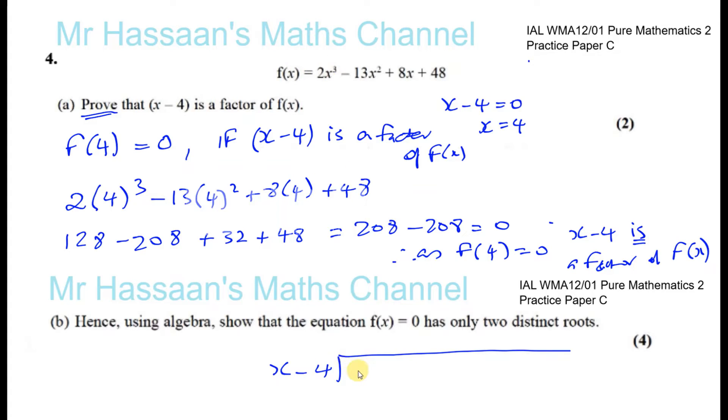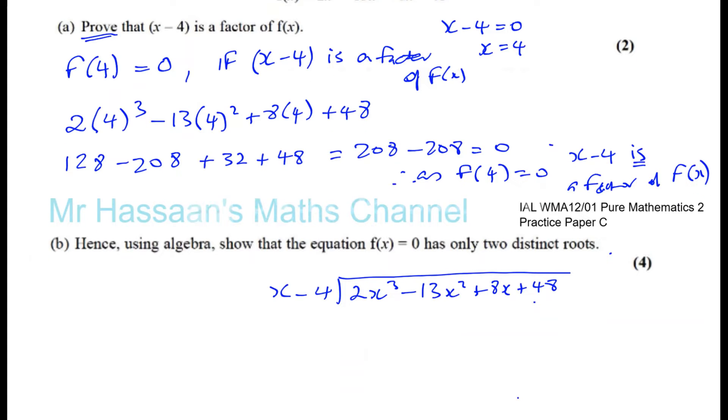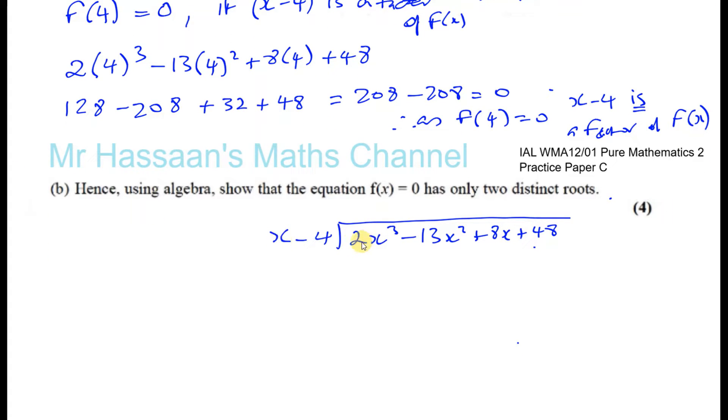I've got here 2x³. So we've got 2x³ minus 13x² plus 8x. There's nothing missing, so I can just write them straight down. Minus 13x² plus 8x plus 48. Remember, if there's something missing, for example if there's no x² term, I'd have to put 0x². But here there's no problem. Everything is fine.